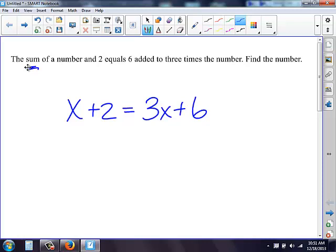Now I'm solving for x. I need to get all my x's on one side, so I'm going to get rid of this x on this side by subtracting x on both sides. This side it's gone, I still have a positive 2. A 3x minus an x is a 2x, and then I still have 6.